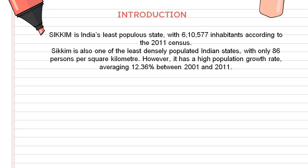Introduction: Sikkim is India's least populous state with 6,10,577 inhabitants according to the 2011 census. Sikkim is also one of the least densely populated Indian states with only 86 persons per square kilometer. However, it has a high population growth rate averaging 12.36% between 2001 and 2011.